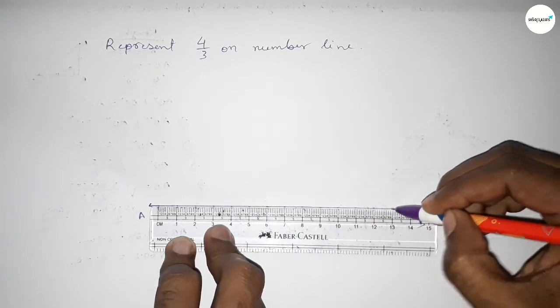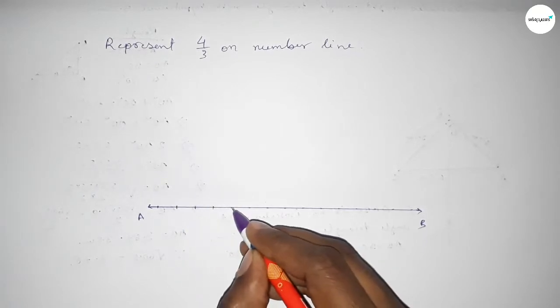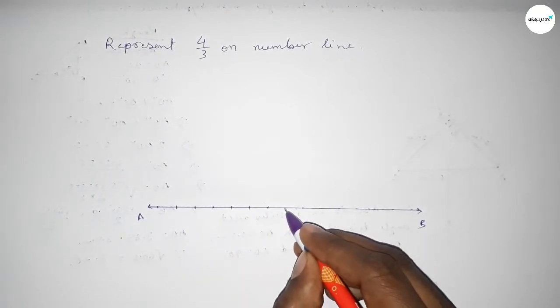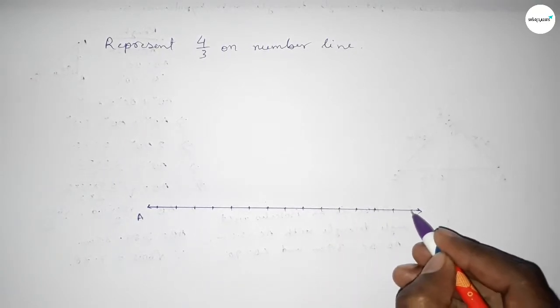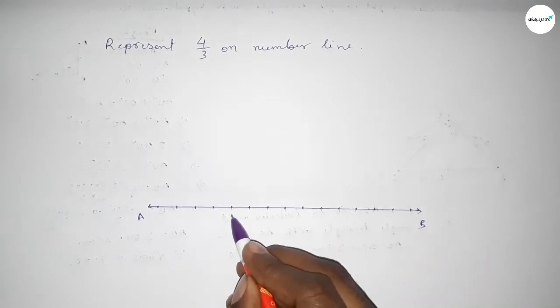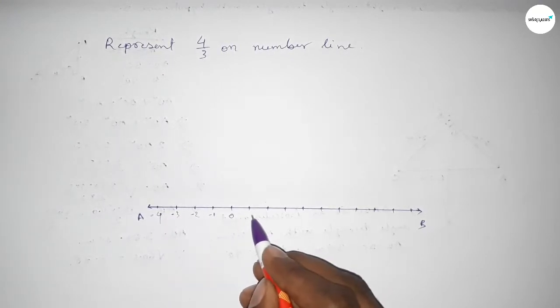Now marking the numbers with deep color to understand perfectly. Marking the numbers by this way: taking here starting number zero, this side minus one, minus two, minus three, minus four, and this side one, two, three, four, five, six, seven, eight, nine, ten.